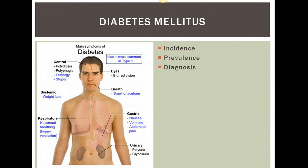Diabetes is diagnosed with a random blood sugar greater than 200, or with hemoglobin A1C. Hemoglobin A1C shows the glucose stored in hemoglobin and provides a 120-day look-back period, which corresponds to the life of the red blood cell. With this test, we are seeing a look-back at sugar levels for that longer length of time.